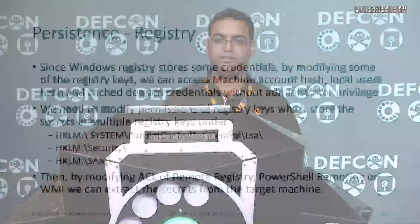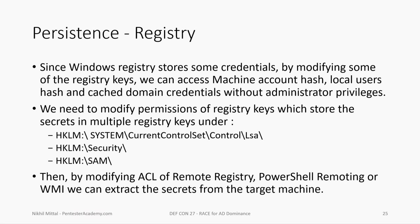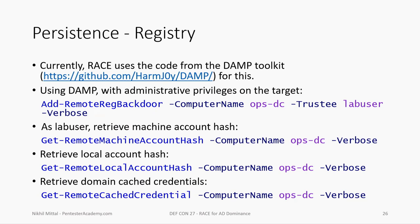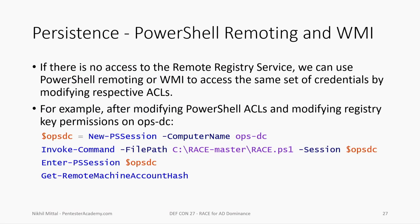The registry also stores interesting credentials. By modifying permissions for multiple registry keys, we can extract credentials from them — machine account hash, local user hashes, domain cached credentials. We'll make use of code from the DAMP toolkit, which is included in the RACE toolkit. By using the following commands, we can access or extract information from the registry. To answer the so-what: even if remote registry is not running or is firewalled off, we can modify the PowerShell remoting ACL and then run commands to extract credentials from the registry without domain admin privileges. The least we can do with the machine account hash of a DC is a DCSync attack.